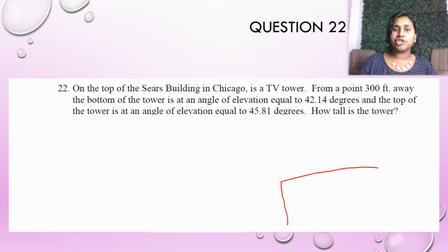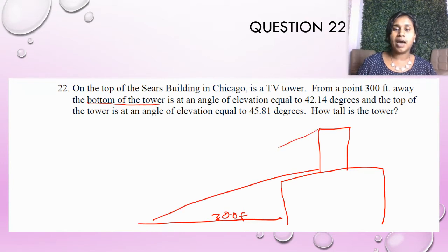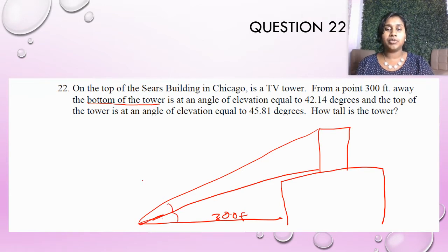I do have another drawing, but I'm just going to show. So here's my Sears building. On top of it, there's some sort of TV tower. If I am 300 feet away, there are two angles of elevation. The first one is from the bottom of the tower and the second one is from the top of the tower. And let's pretend we all connected at the same point. So that's the two. That's kind of how that setup looks.